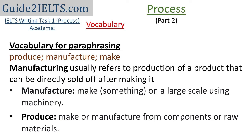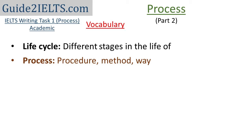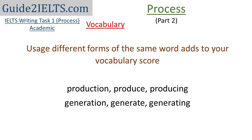We can replace 'life cycle' with 'different stages in the life of,' and 'process' with 'procedure,' 'method,' or 'way.' For electricity, we can use the words 'production' and 'generation' both. We always need to keep in mind that usage of different forms of the same word adds to your vocabulary score — for example, production, produce, producing; and generation, generate, generating.